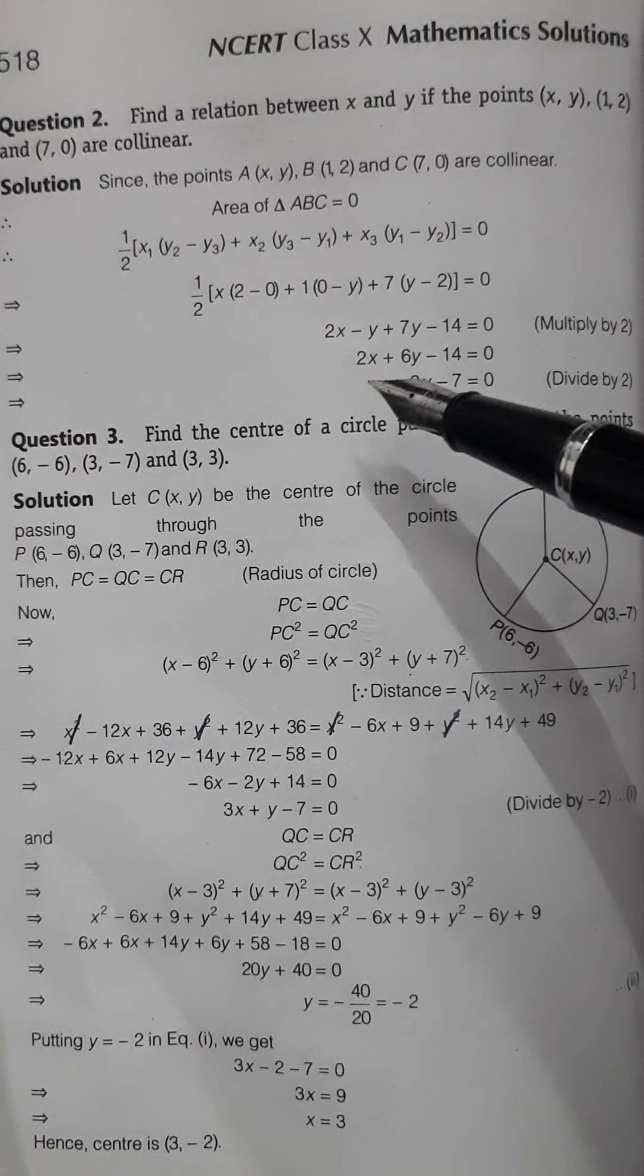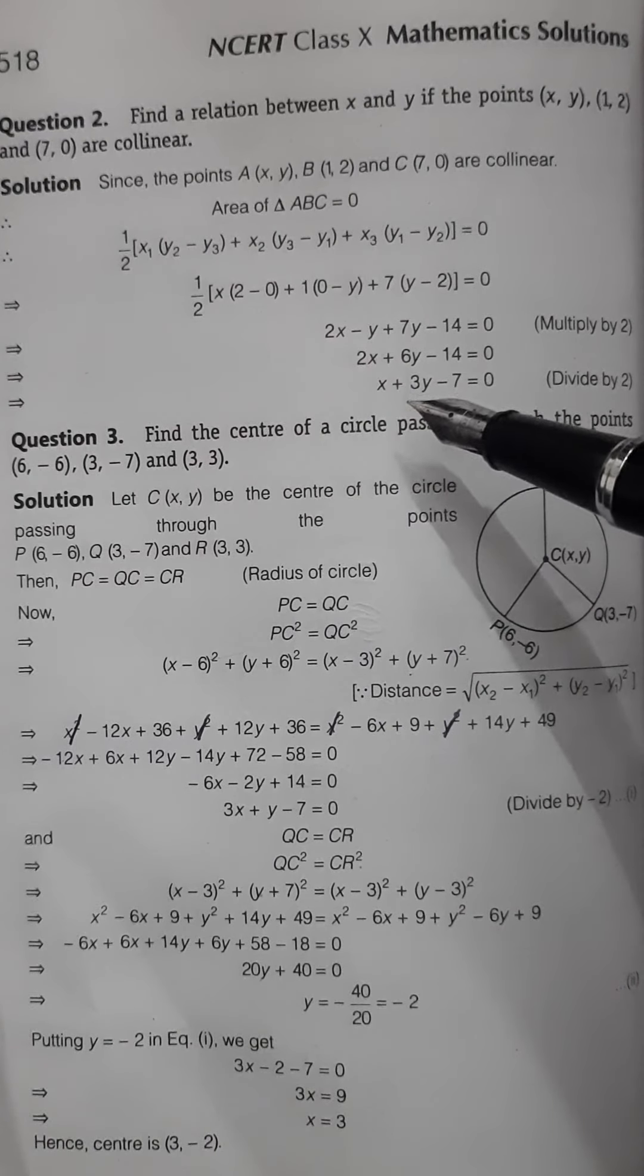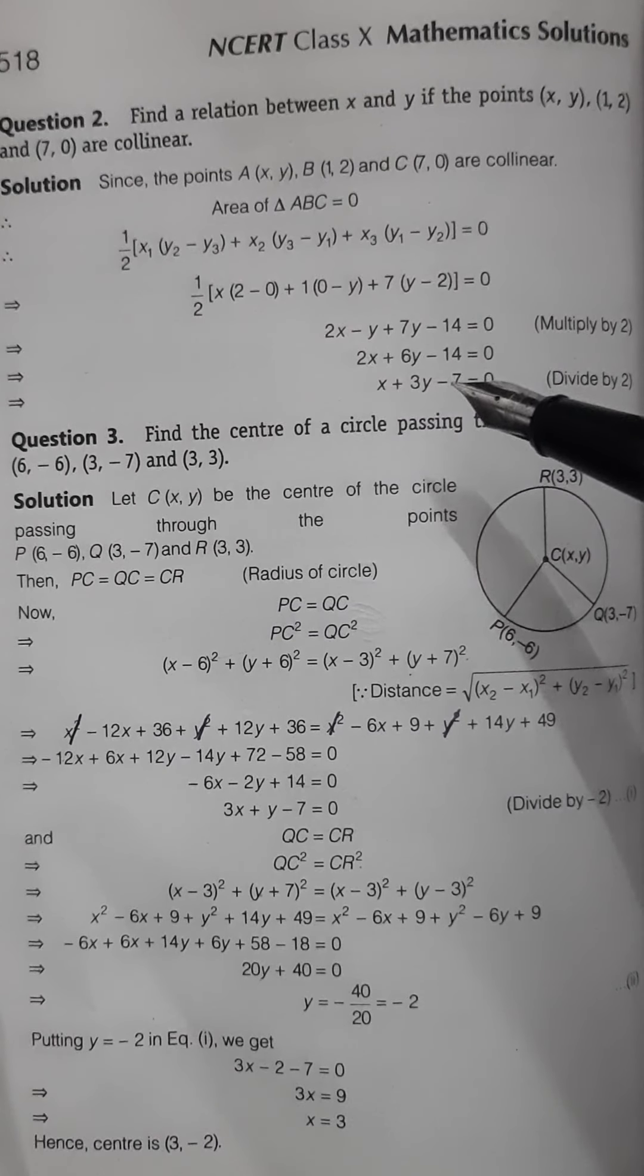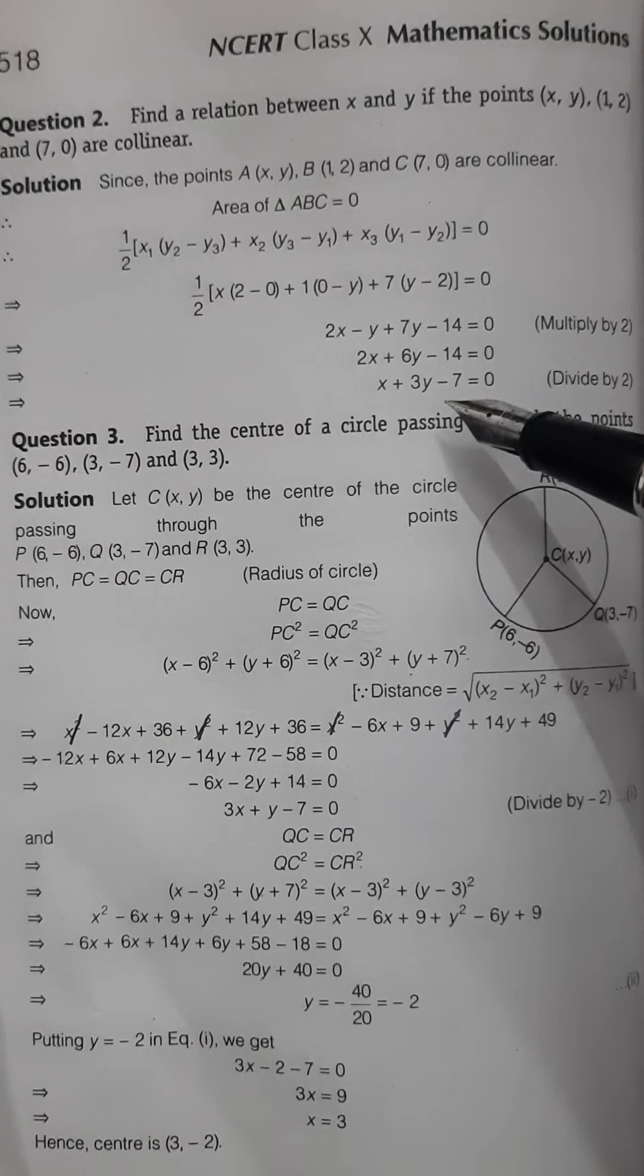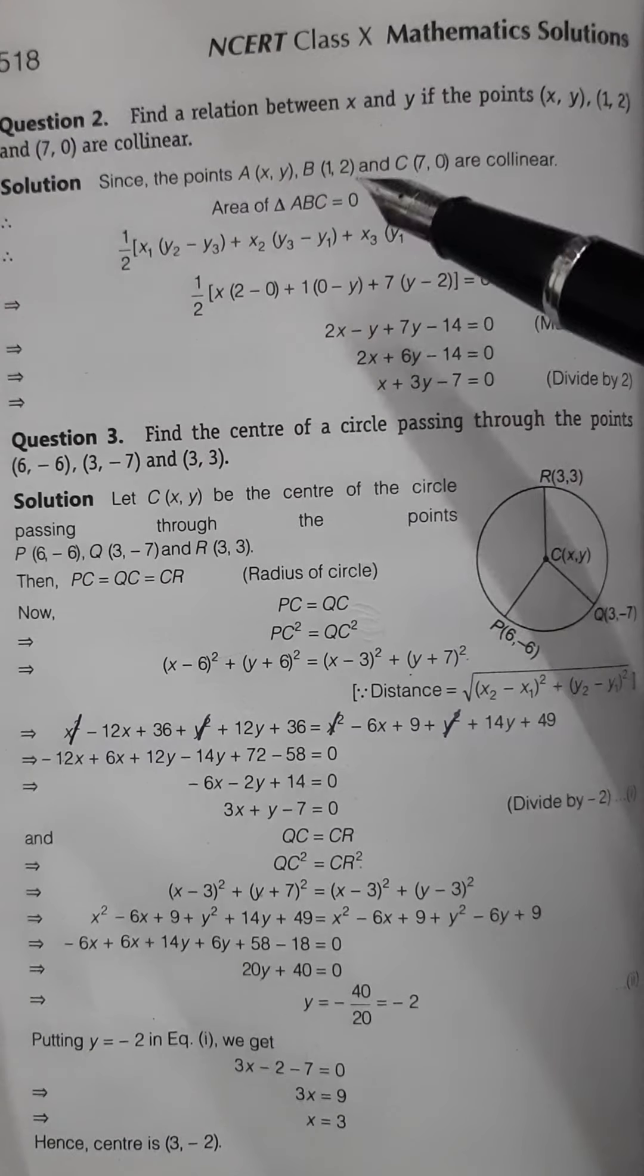We find that 2 is common in all, so we can take out the 2 common. Therefore we get x + 3y - 7 = 0. We can't solve this further because it's a linear equation in two variables, and the question asks to find a relation between x and y, so this is the relation.